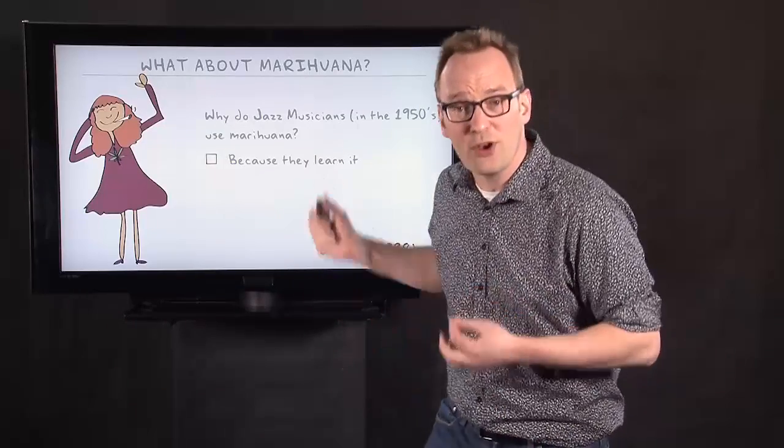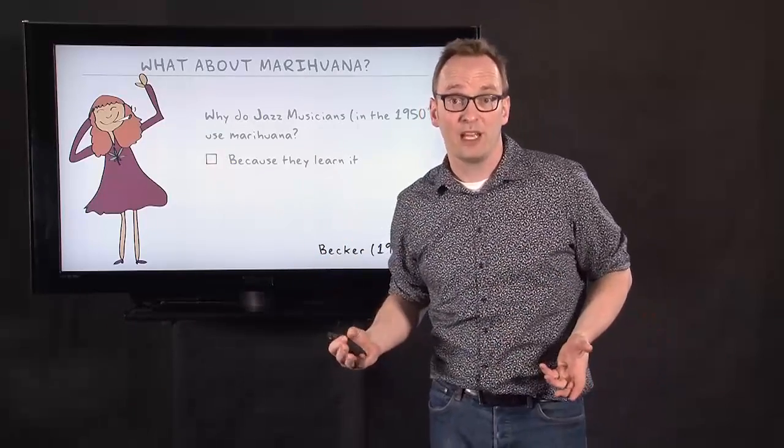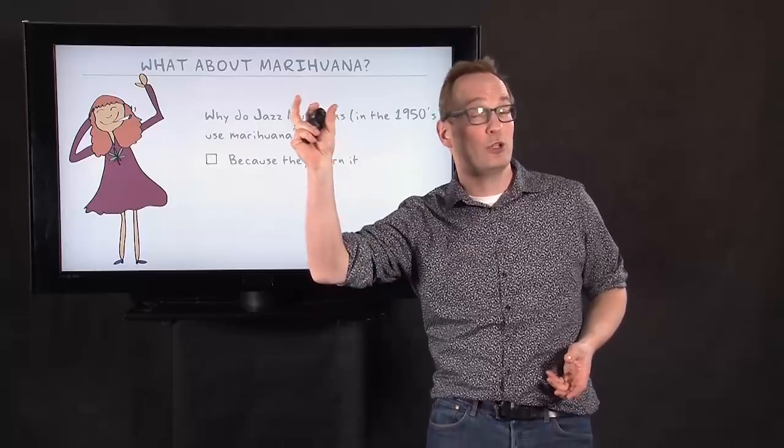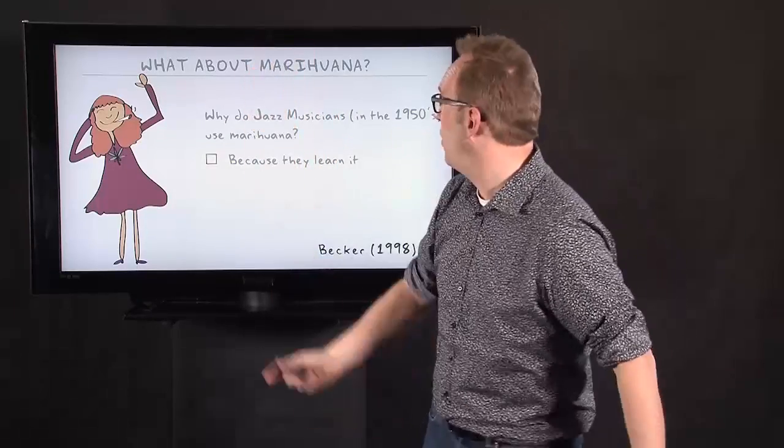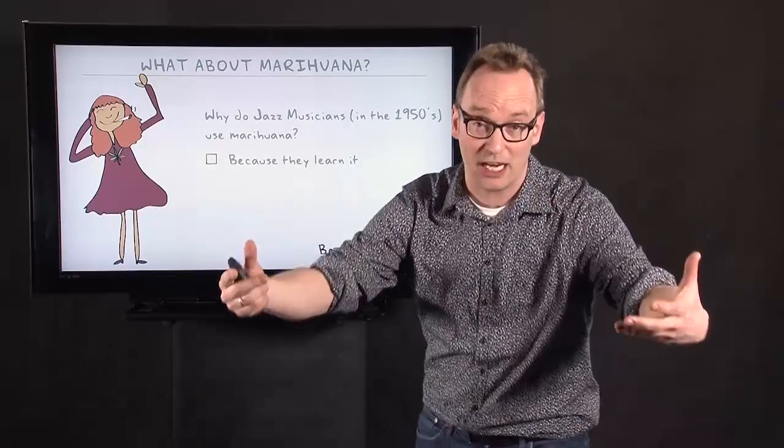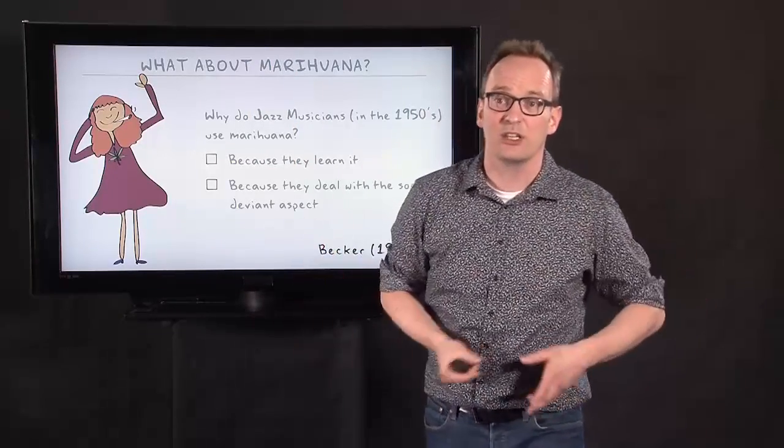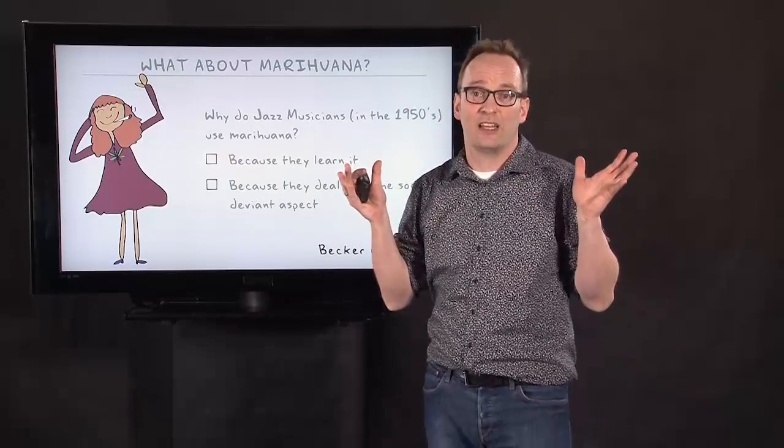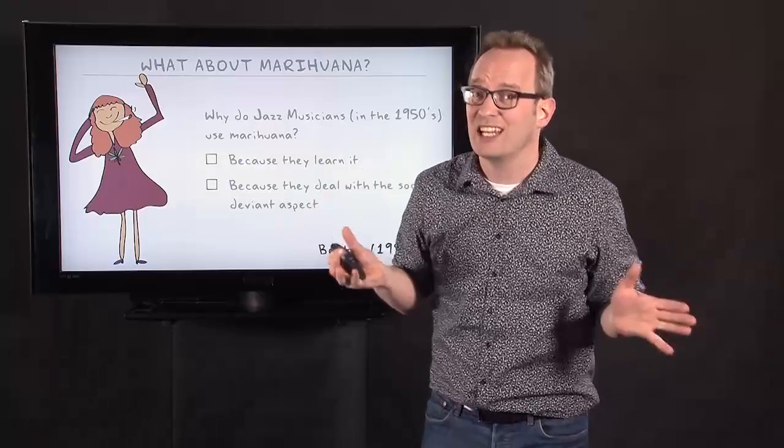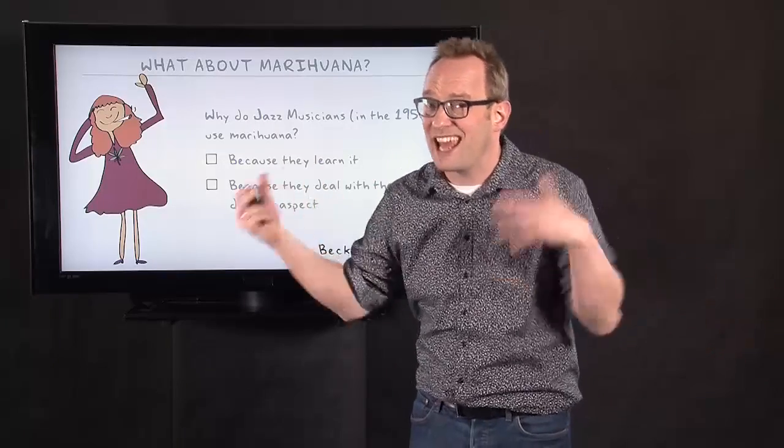And he says, well, in the end, there are two reasons. The first is because they learn it. So we have the outcome. Why do they use marijuana? Why have they become marijuana users? Well, because they learned it. It's a necessary condition. And second, another necessary condition, because they deal with the social deviant aspect. Because people in their surrounding probably didn't like it and they had to deal with that.